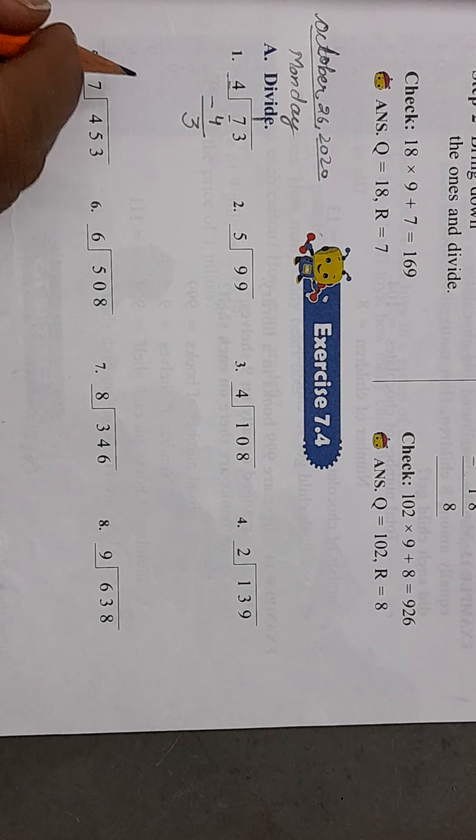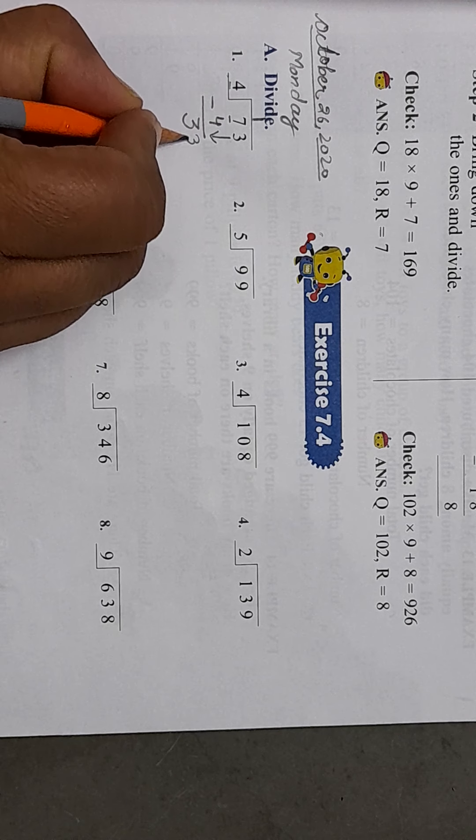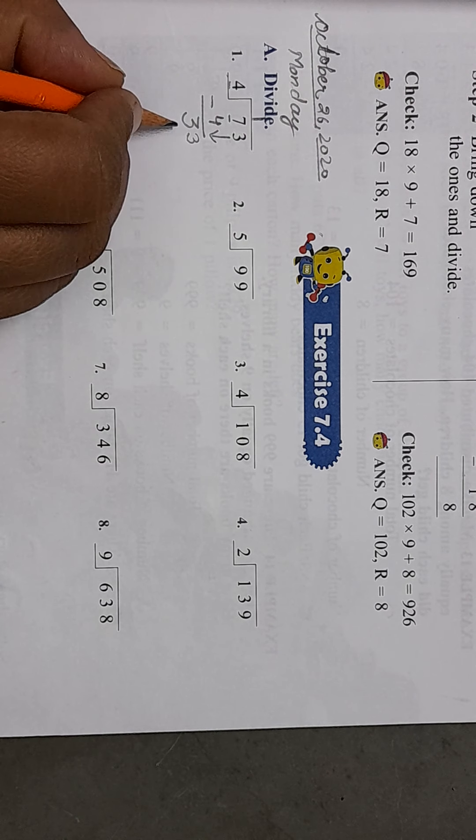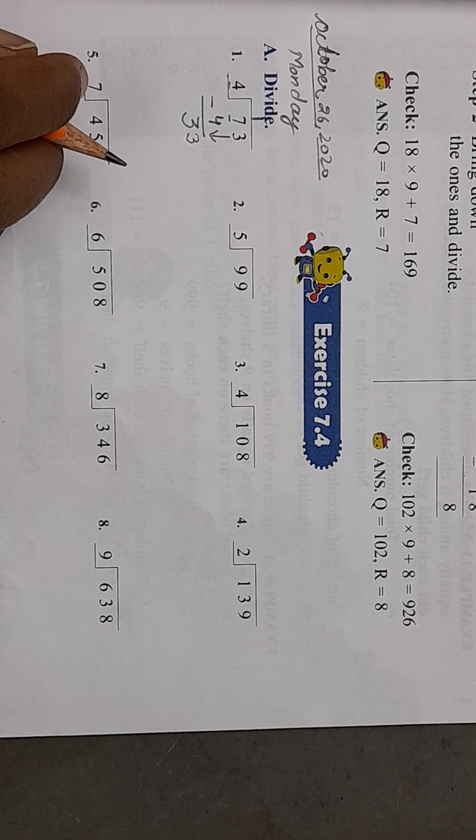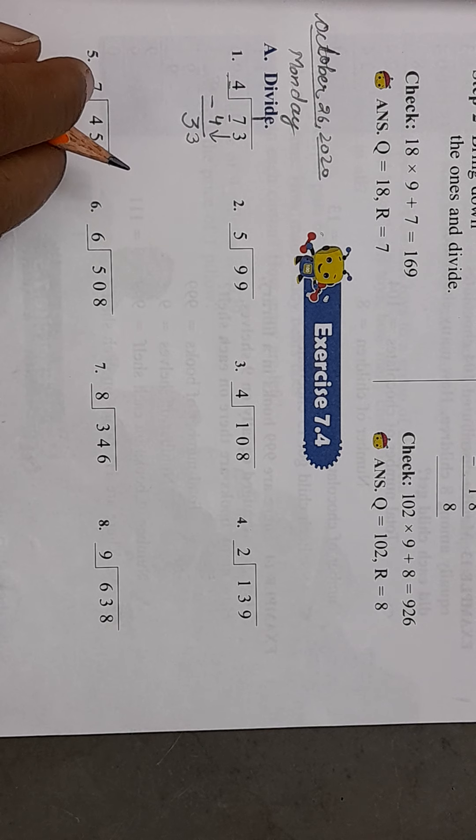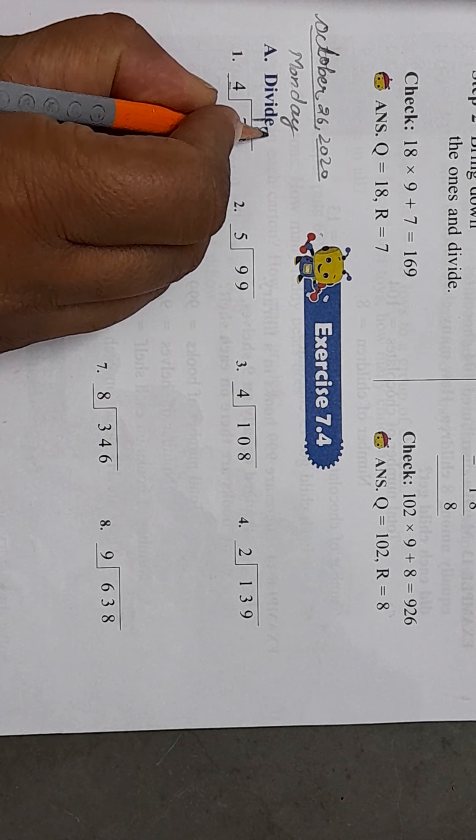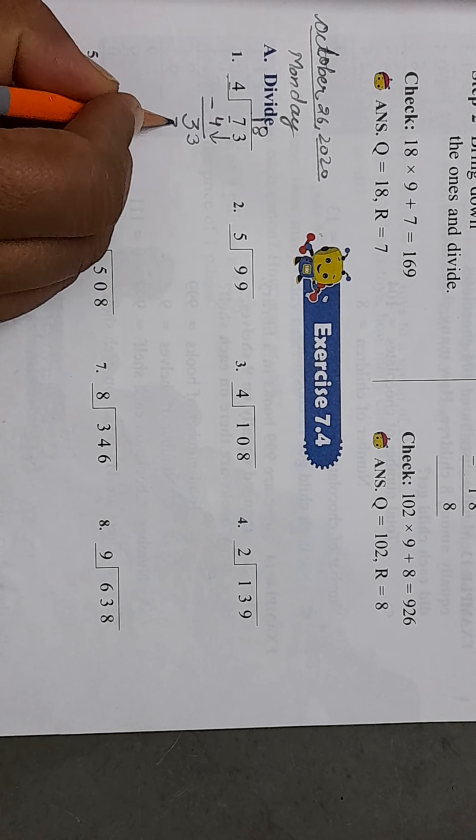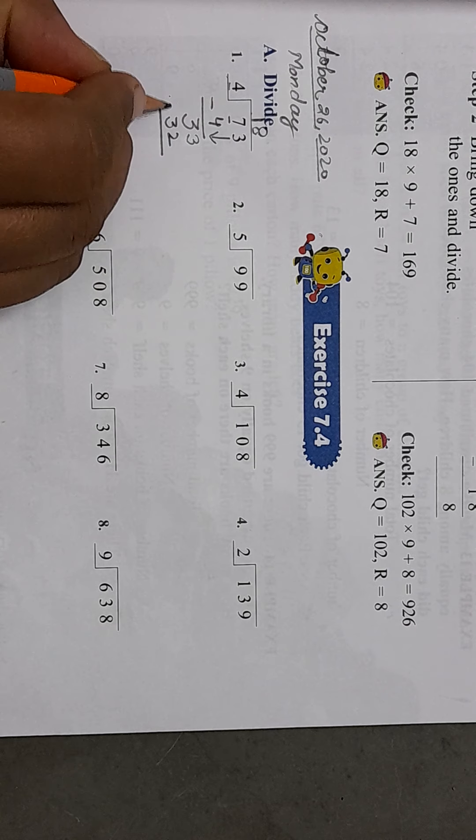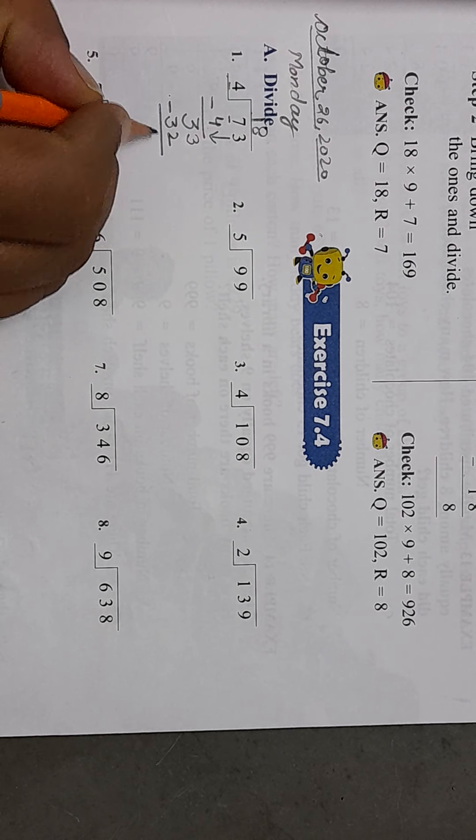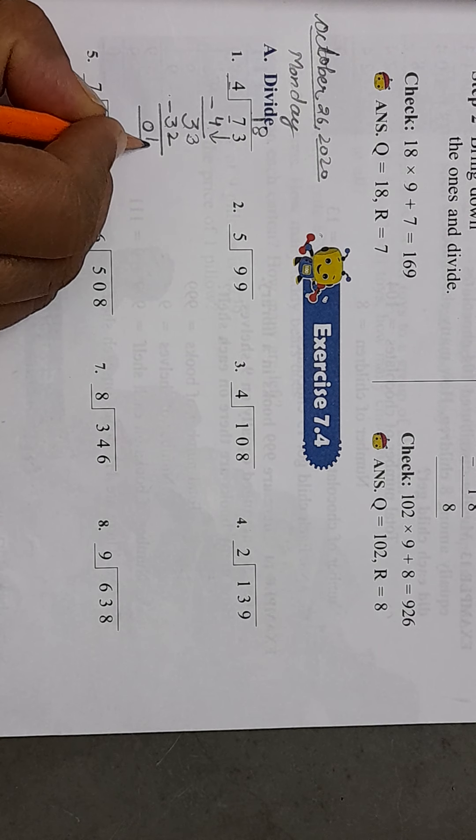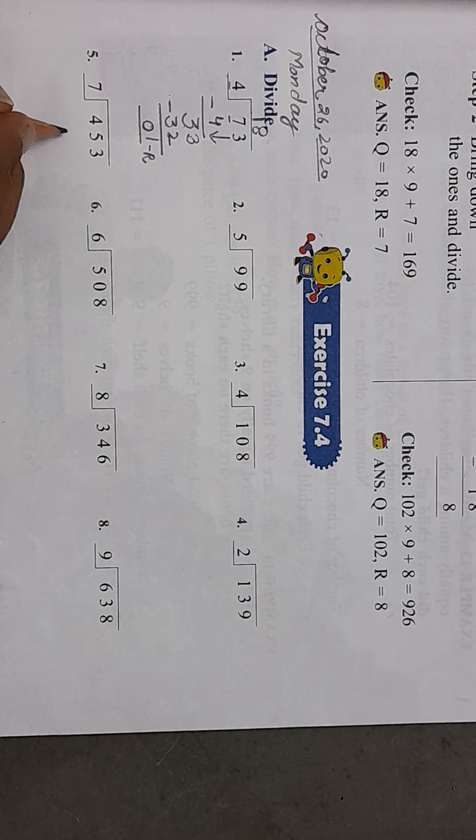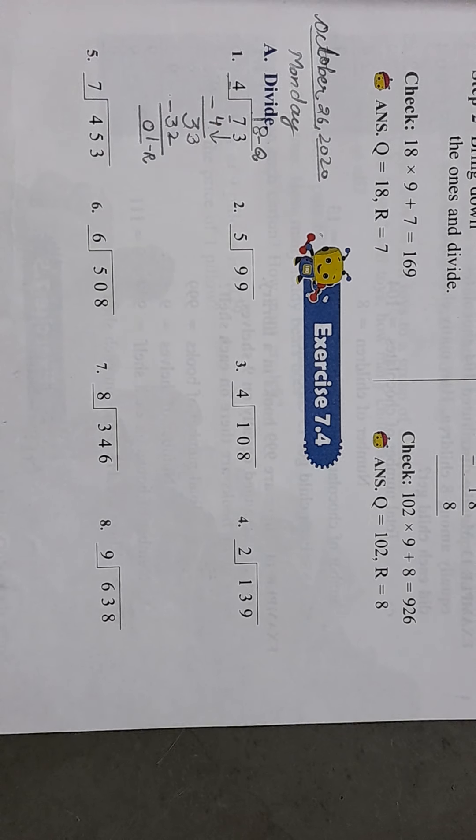Now we bring down this 3. Now which number is it? 33. Does 33 come in the table of 4? No. So which number comes in the table of 4 which is less than 33? It's 32 and 4 eights are 32. First we write the quotient, then we subtract. 3 minus 2 is 1 and 3 minus 3 is 0. So 1 is the remainder and 18 is the quotient.